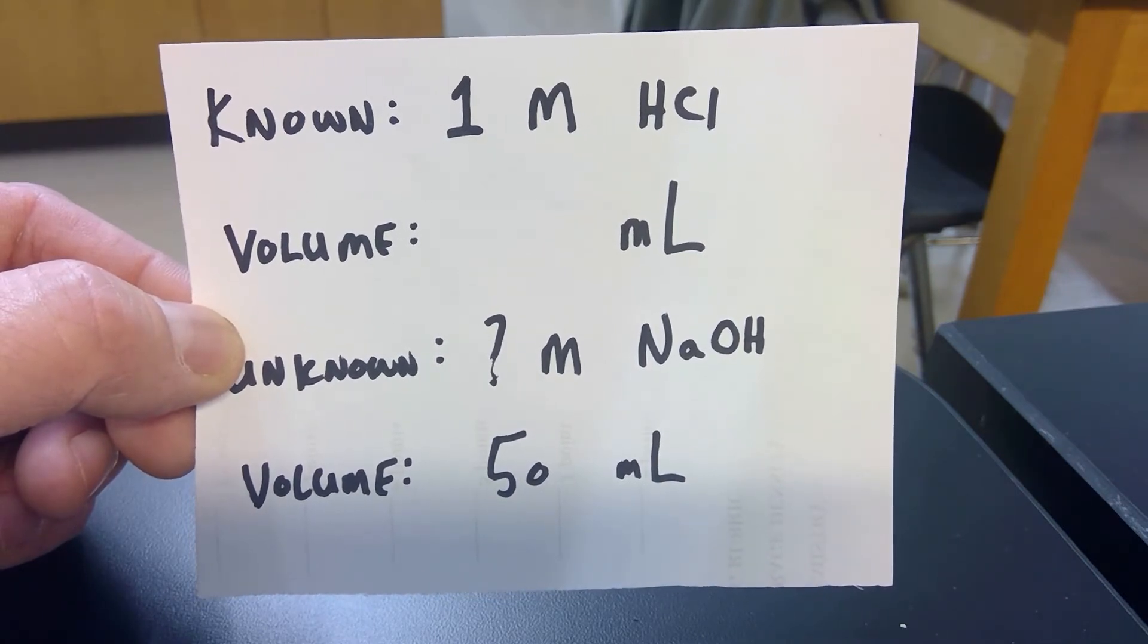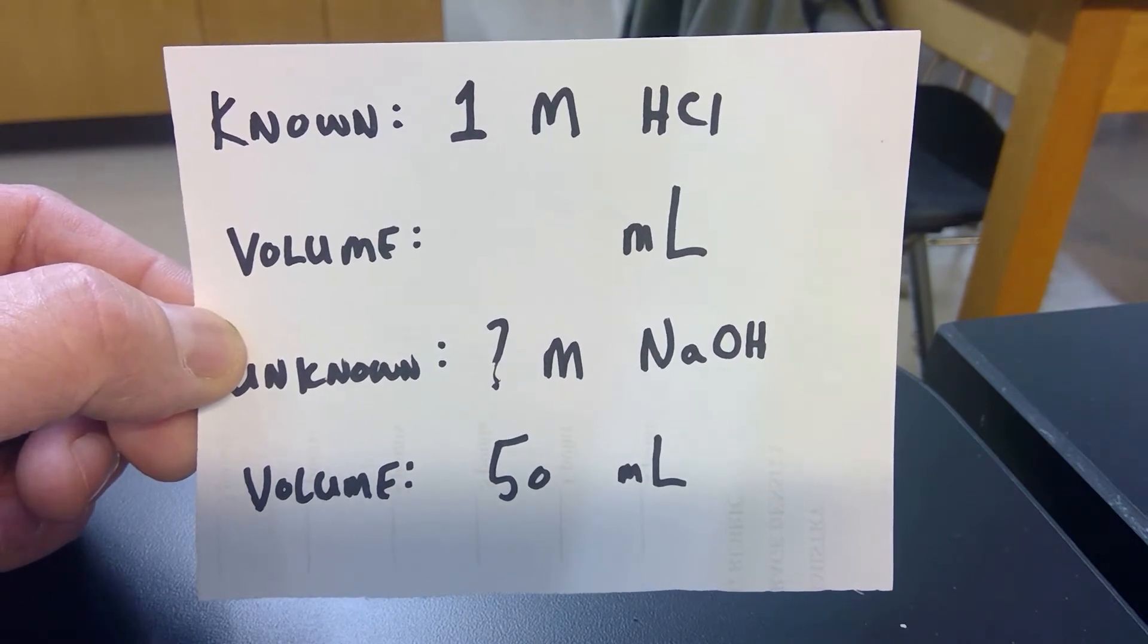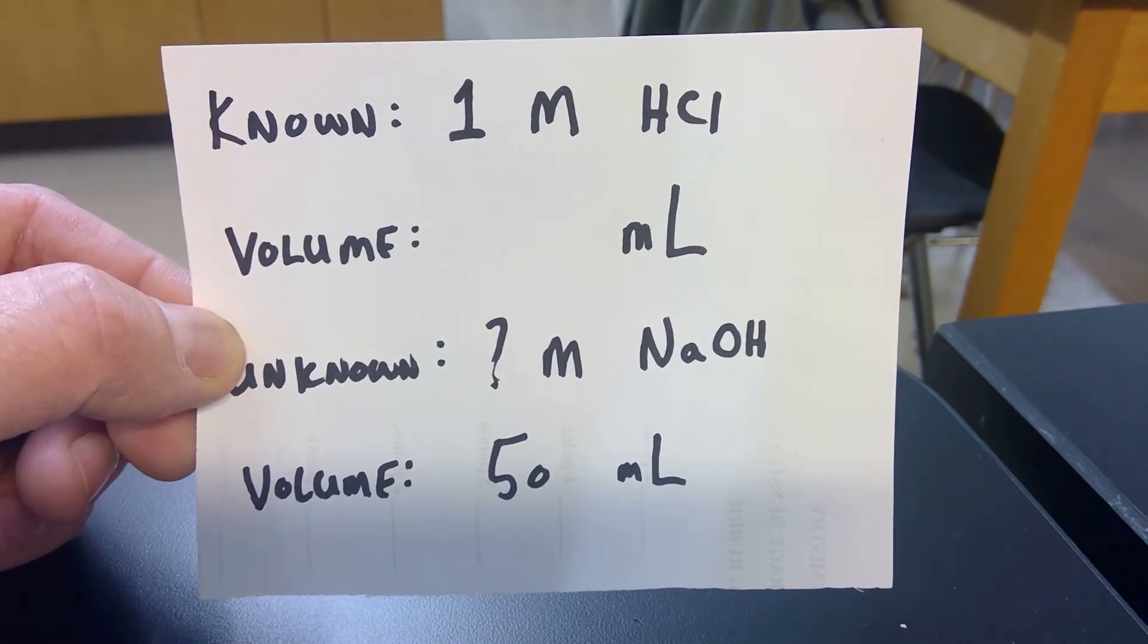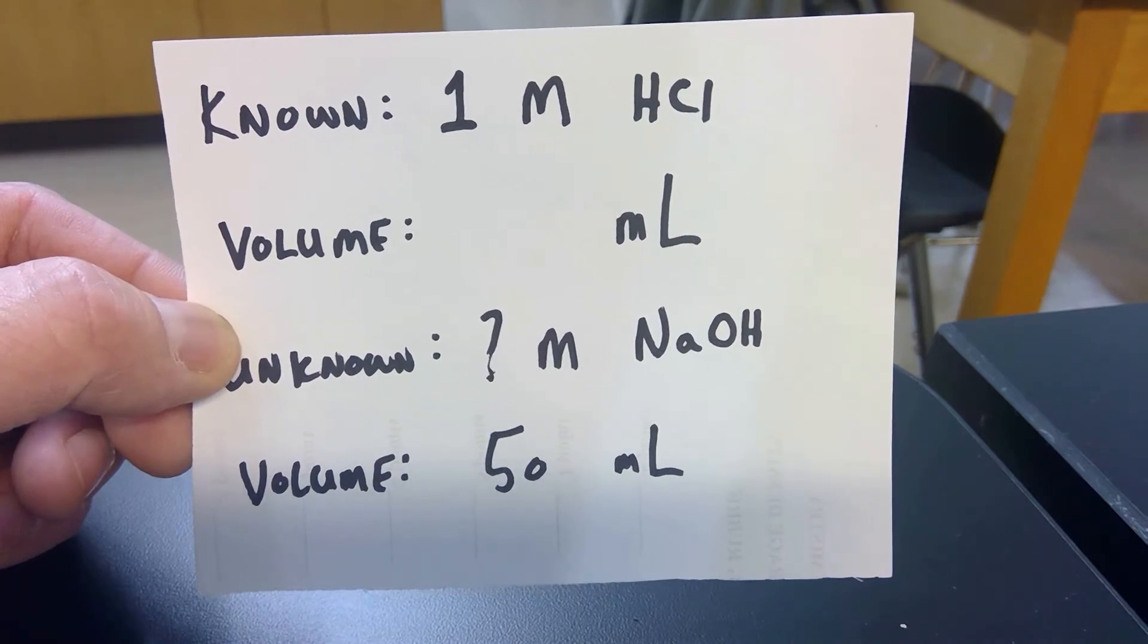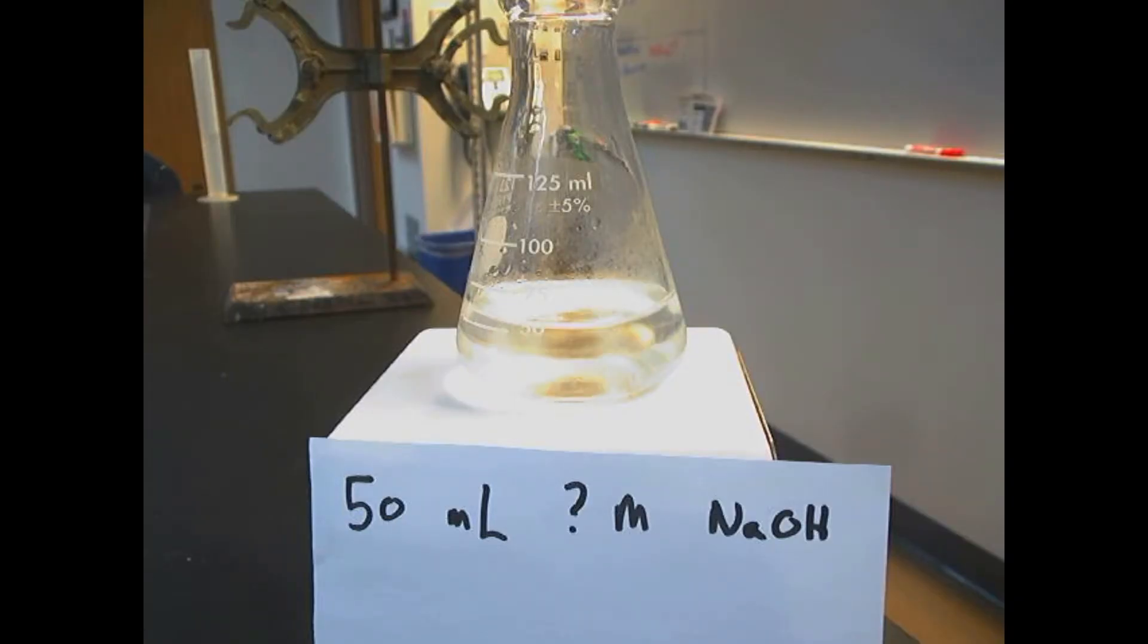We don't know how much volume we need yet because that's what the titration does. We are going to titrate our unknown, which is sodium hydroxide, and I have currently measured out exactly 50 milliliters. So in our flask that is currently being stirred, we have exactly 50 milliliters of unknown molarity sodium hydroxide. We know the volume, we don't know the concentration.